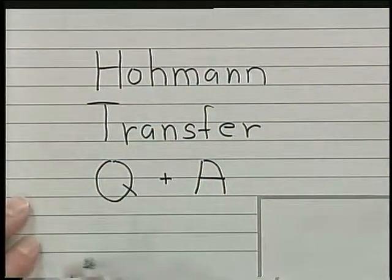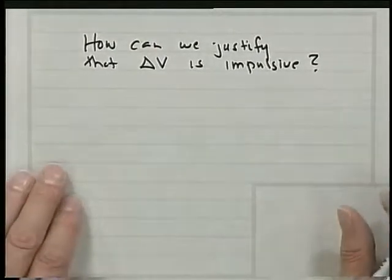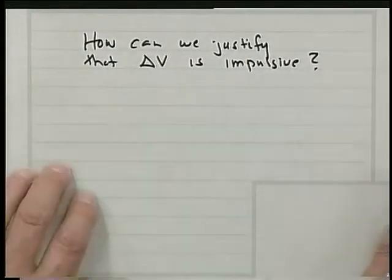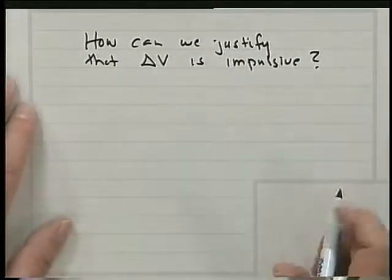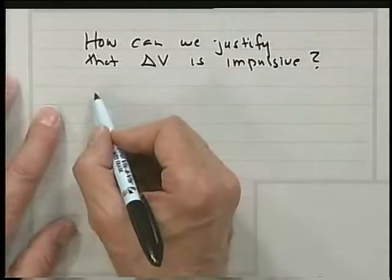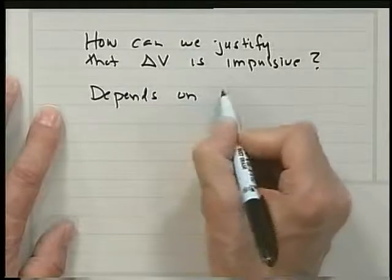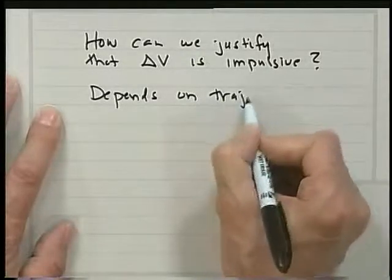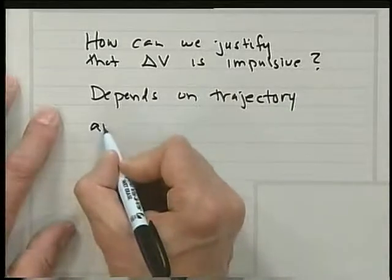Now I'll take some questions on Hohmann transfer. The first question is: how can we justify that the delta-V is impulsive? Well, this depends on the type of trajectory and on the maneuver time itself.